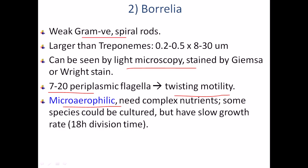Borrelia are microaerophilic, meaning they need very small amounts of oxygen for growth. Most spirochetes are not oxygen-lovers — some like microaerophilic conditions like Borrelia, and some won't mind if oxygen is present but generally do not prefer it. They need complex nutrients, and some species can be cultured but have a slow growth rate with an 18-hour division time. Compared to Treponema's 30-hour replication time, they are still very slow-growing bacteria because they require very high complexity nutrients.